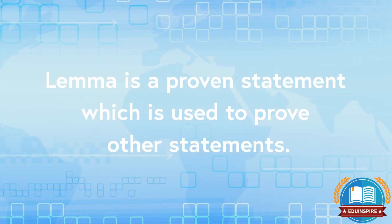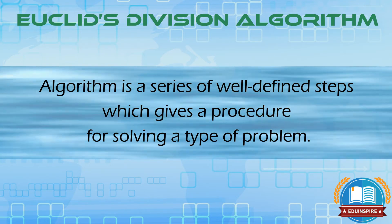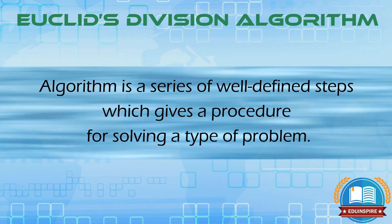Lemma is a proven statement which is used to prove other statements. And algorithm is a series of well-defined steps which gives a procedure for solving a type of problem.